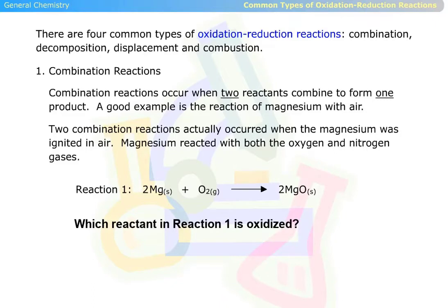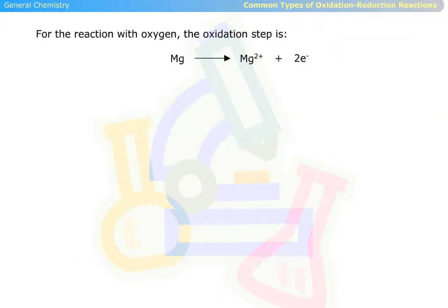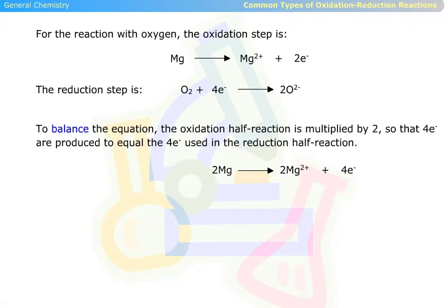Which reactant in reaction 1 is oxidized? Magnesium is oxidized — its oxidation number changed from 0 to plus 2. For the reaction with oxygen, the oxidation step is seen below, and this is the reduction step. To balance the equation, the oxidation half reaction is multiplied by 2, so that four negative electrons are produced to equal the four negative electrons used in the reduction half reaction.